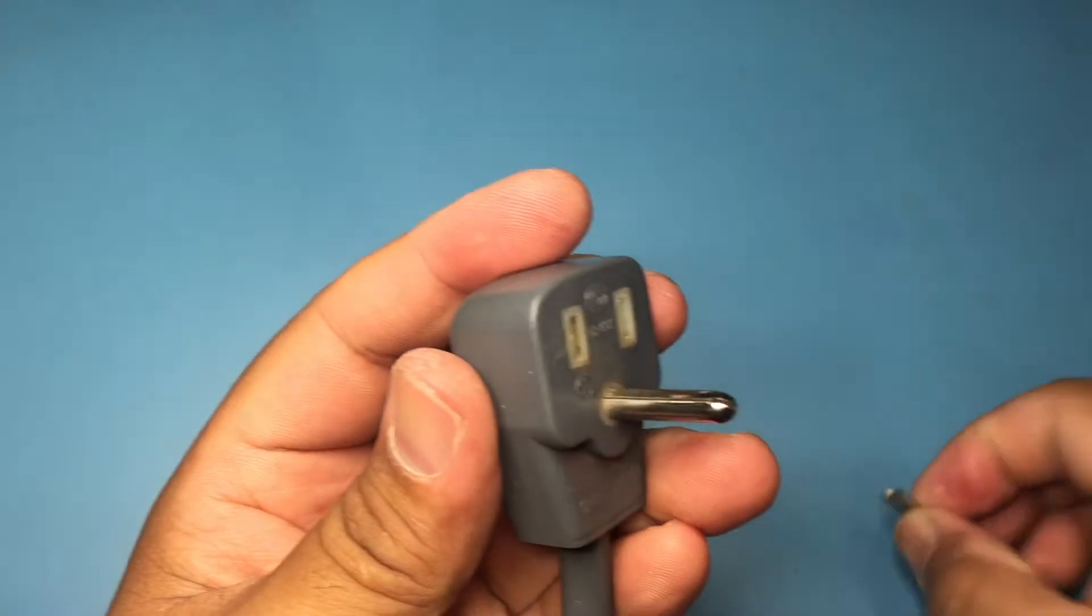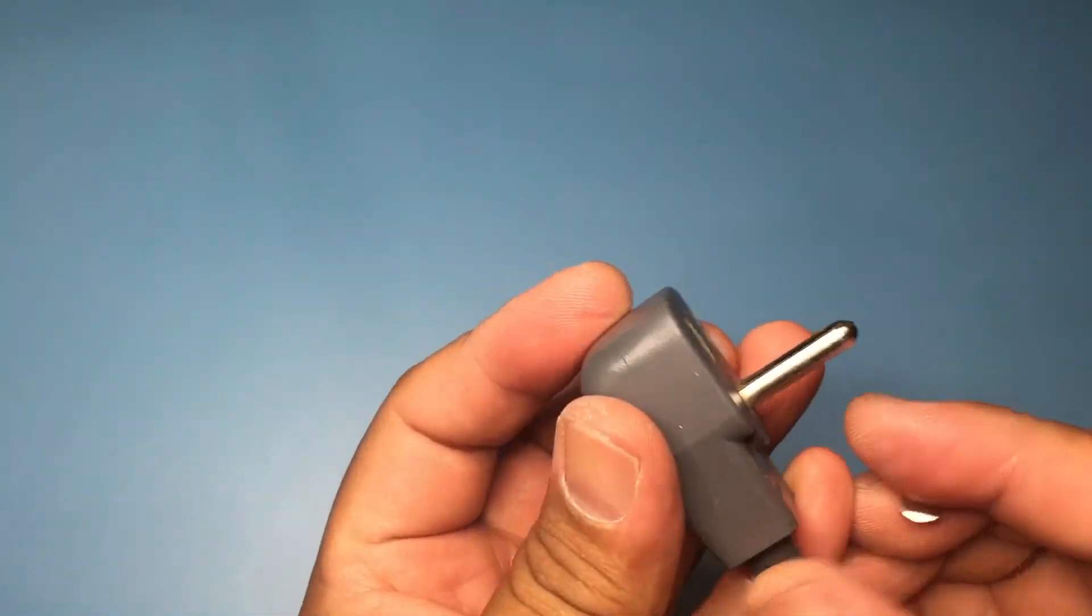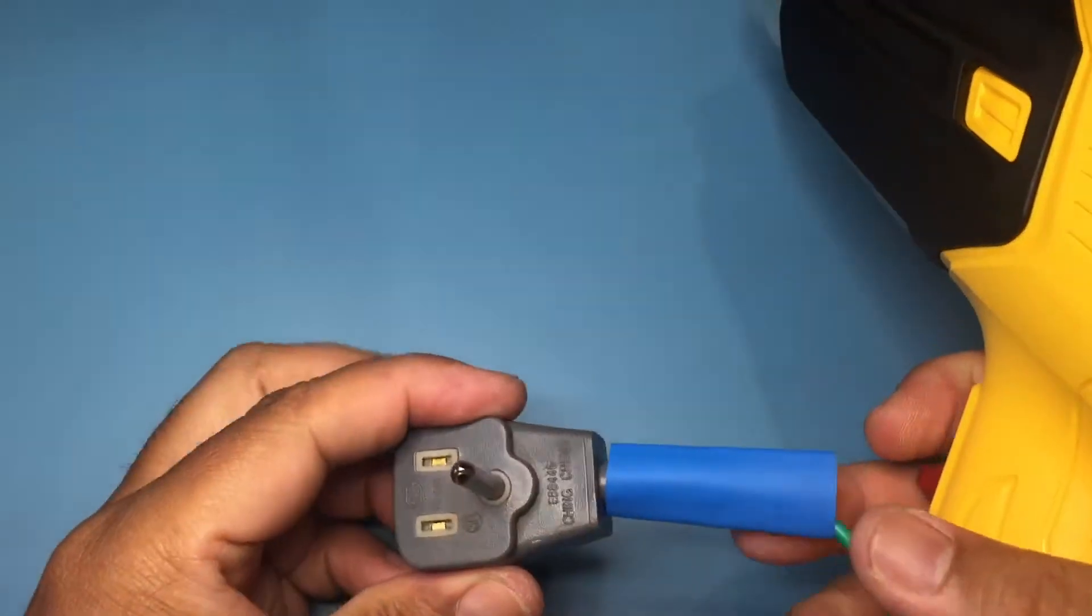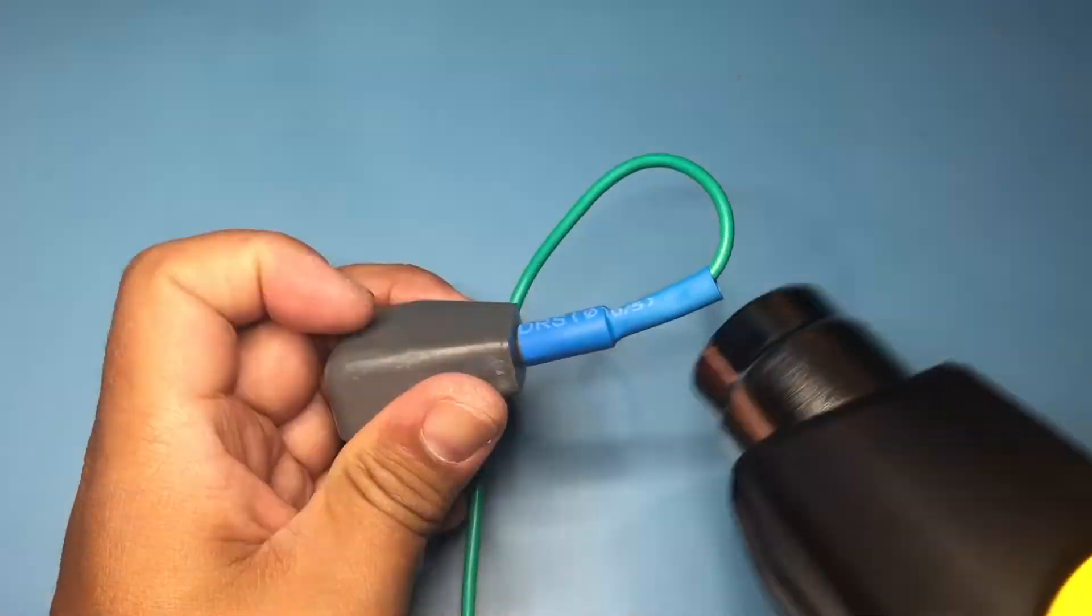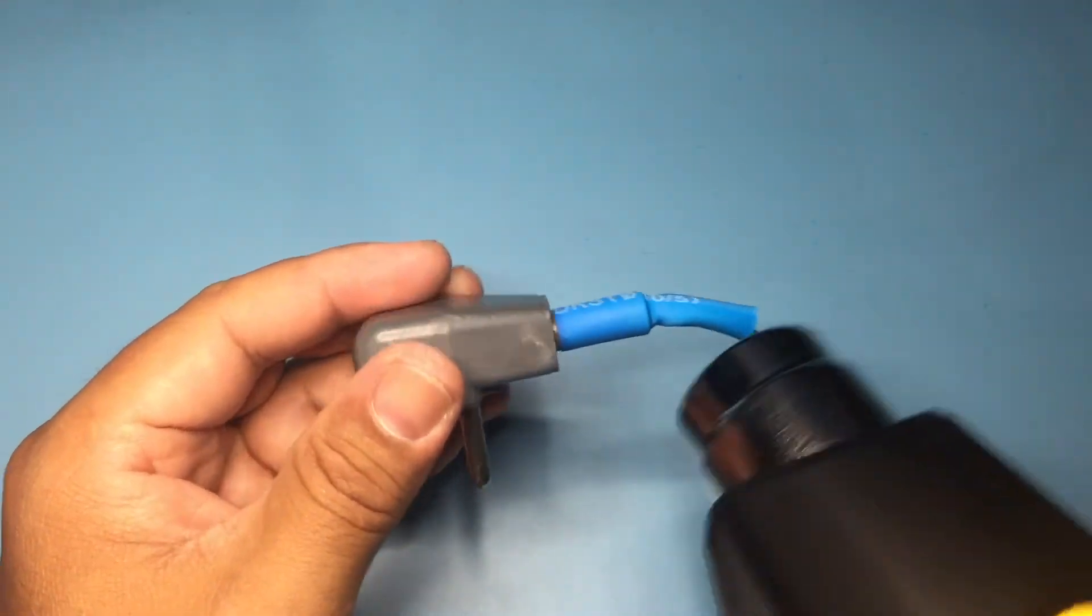I'm using some shrink tubing to give the ground wire some strain relief.